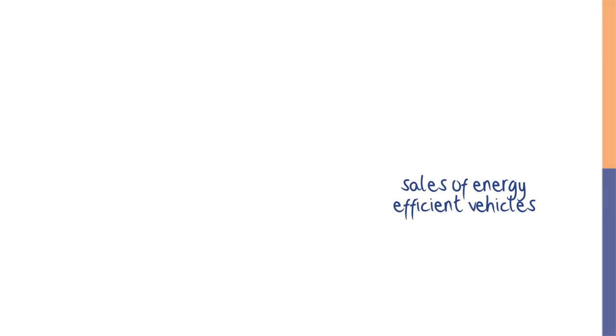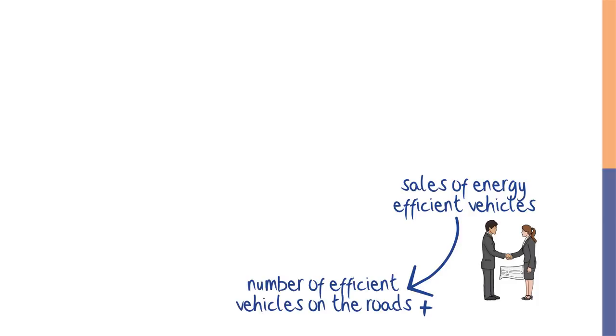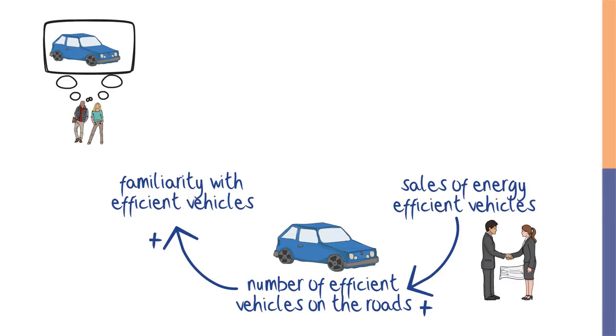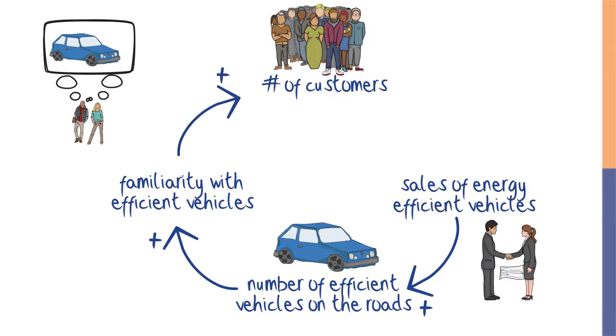Reinforcing feedback loops don't always have only two variables. As a new technology becomes more common and more familiar, new sales pick up and the technology becomes even more common and even more familiar. As sales of energy-efficient vehicles increase, the number of energy-efficient vehicles on the road increases, and people's familiarity with the technology increases, leading to more new customers, more sales, and an even greater number of more efficient vehicles on the road.